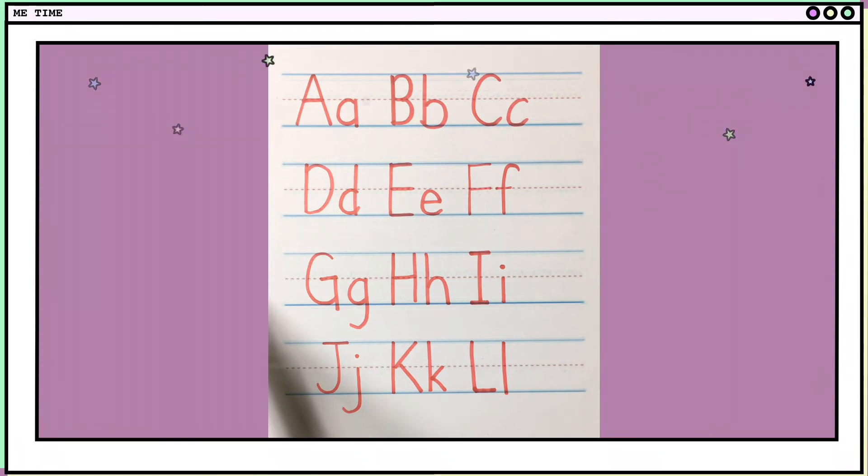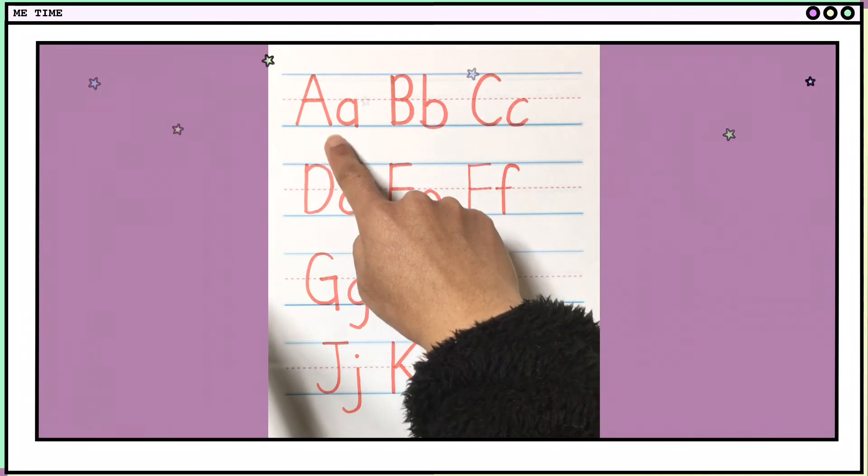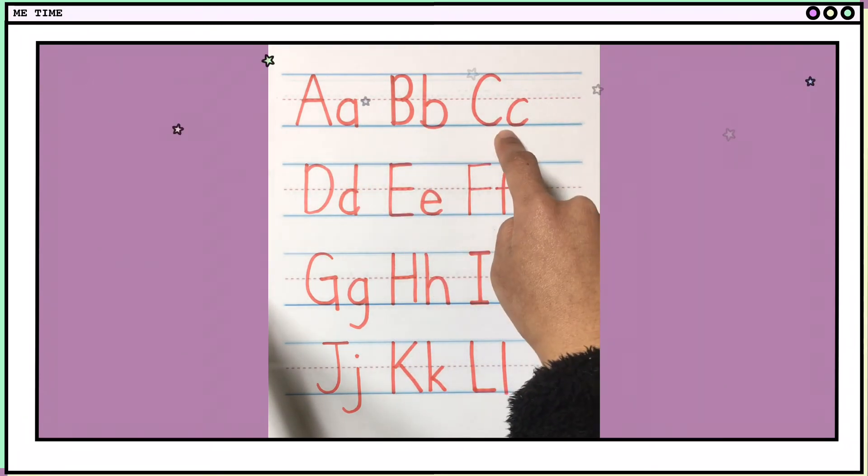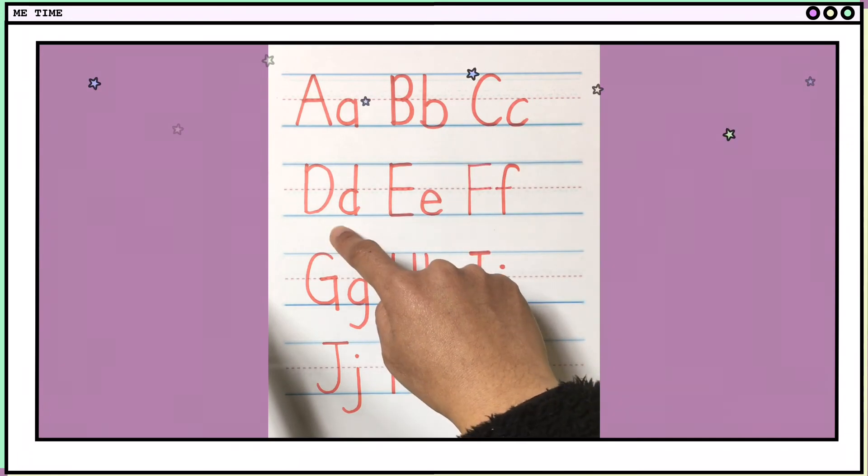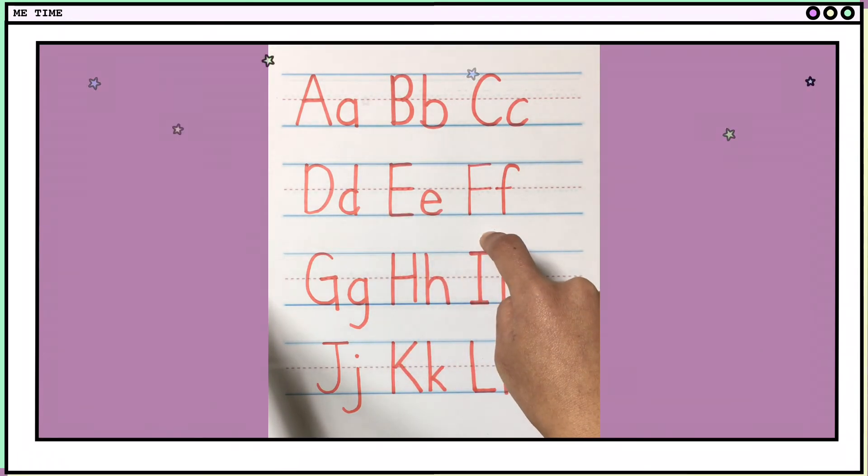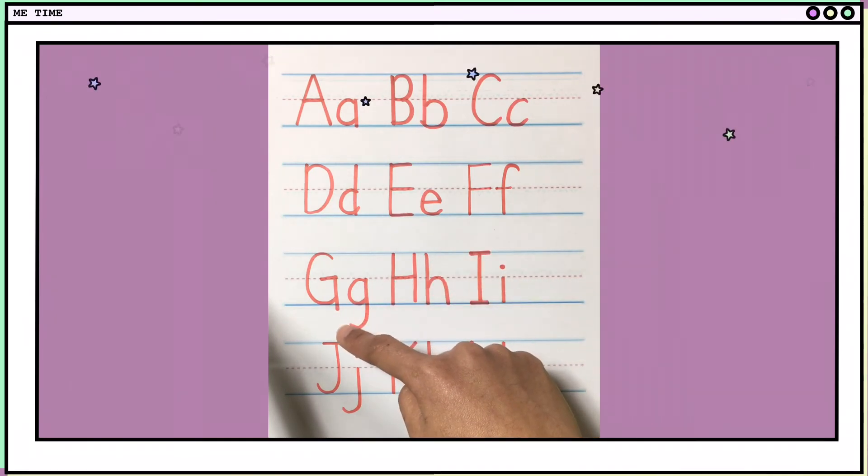So remember their sound? This is A-A. B-B. C-K. D-D. E-A. F-F. G-G. H-HA. I-E. J-J. K-K. L-L. Practice writing your alphabet, okay?